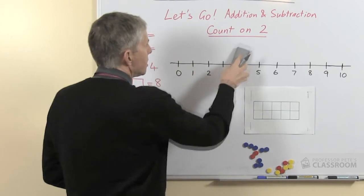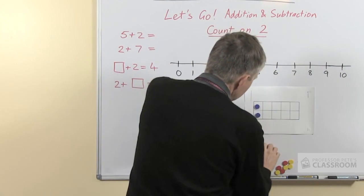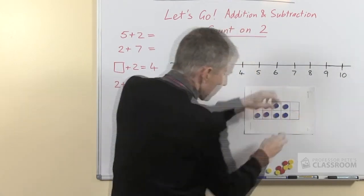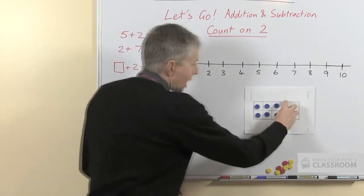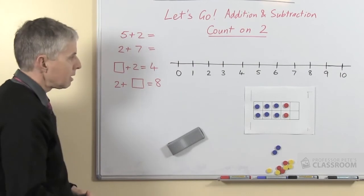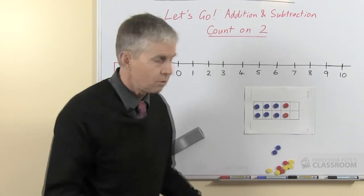Similarly 2 plus something equals 8, using the 10 frame to show this one, we would need to put out the 8 probably all with one color, actually maybe we could do it this way with 2 of them in another color and say 2 plus what equals 8, what's the other number when we've added 2 to it?